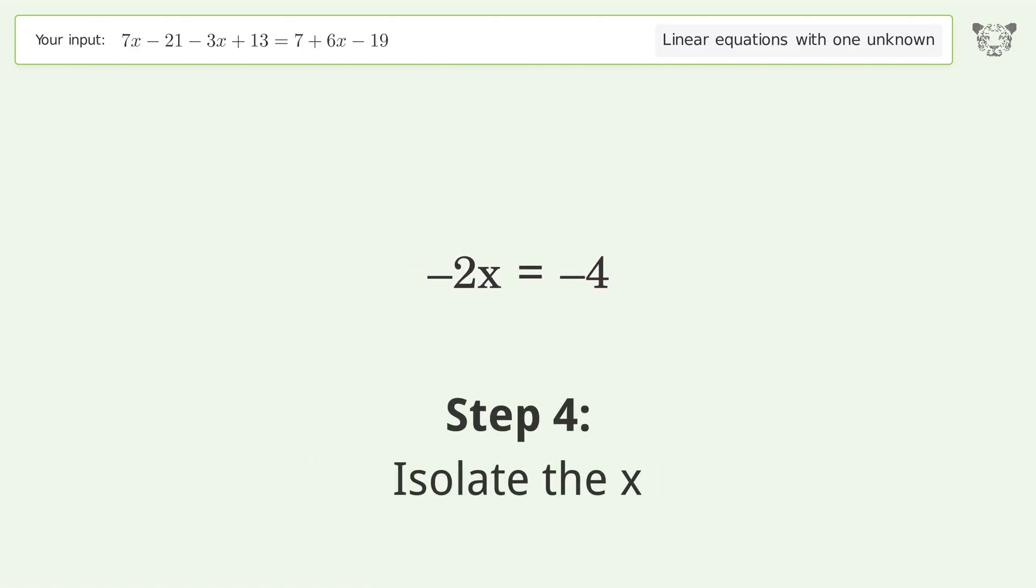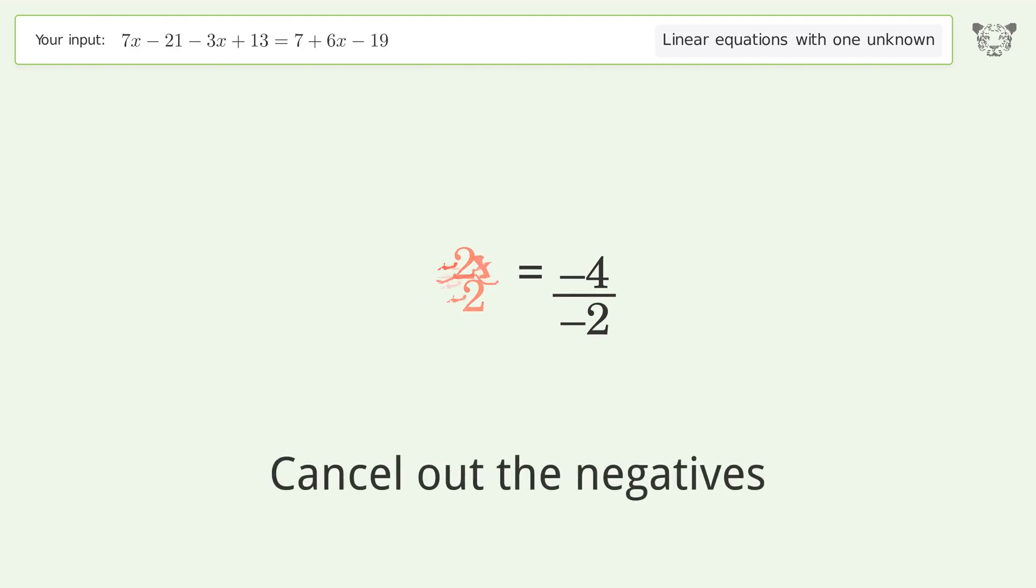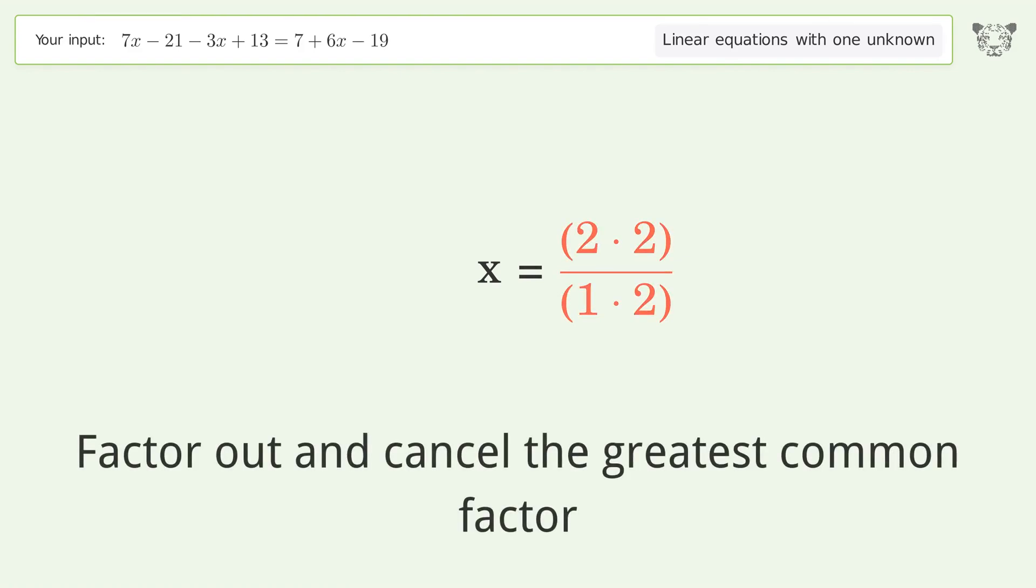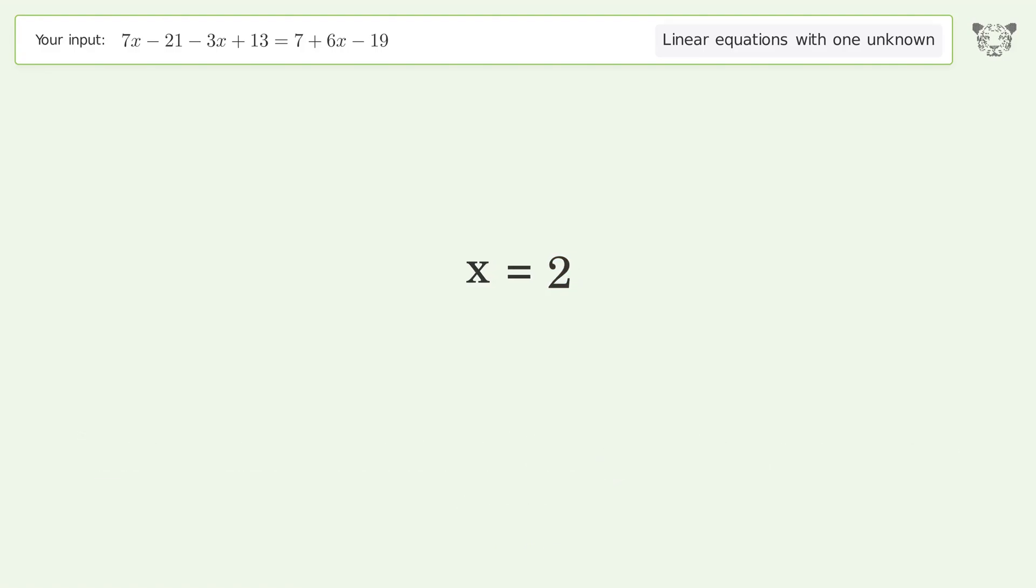Isolate the x. Divide both sides by negative 2. Cancel out the negatives. Simplify the fraction. Cancel out the negatives. Find the greatest common factor of the numerator and denominator. Factor out and cancel the greatest common factor. And so the final result is x equal to 2.